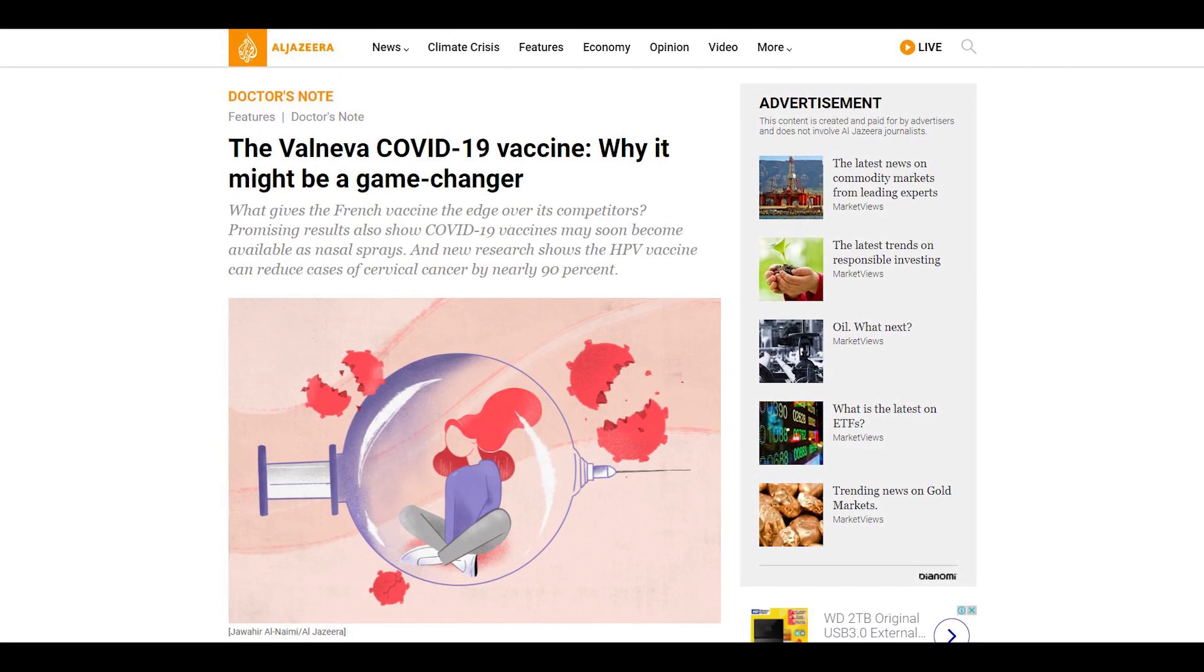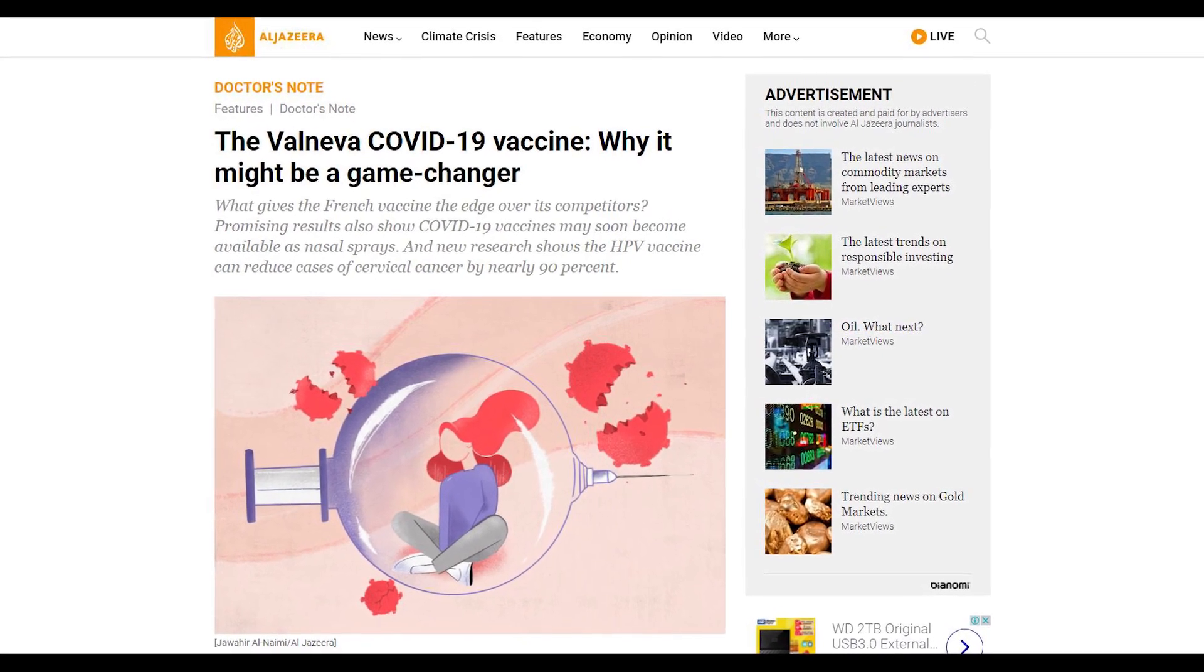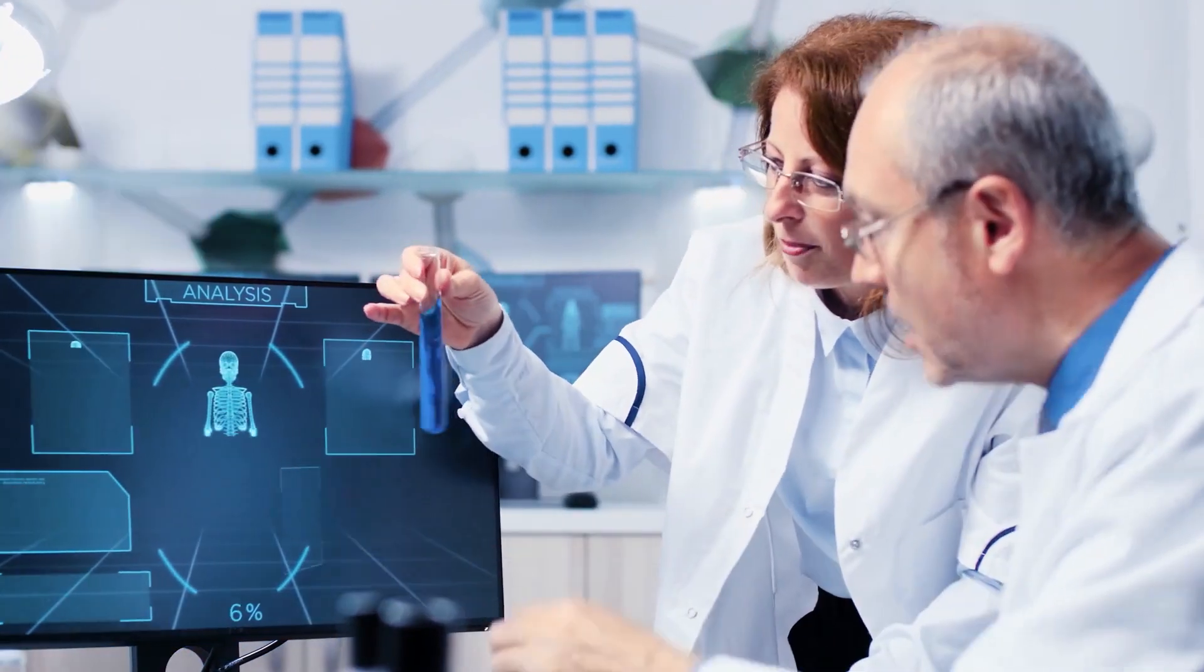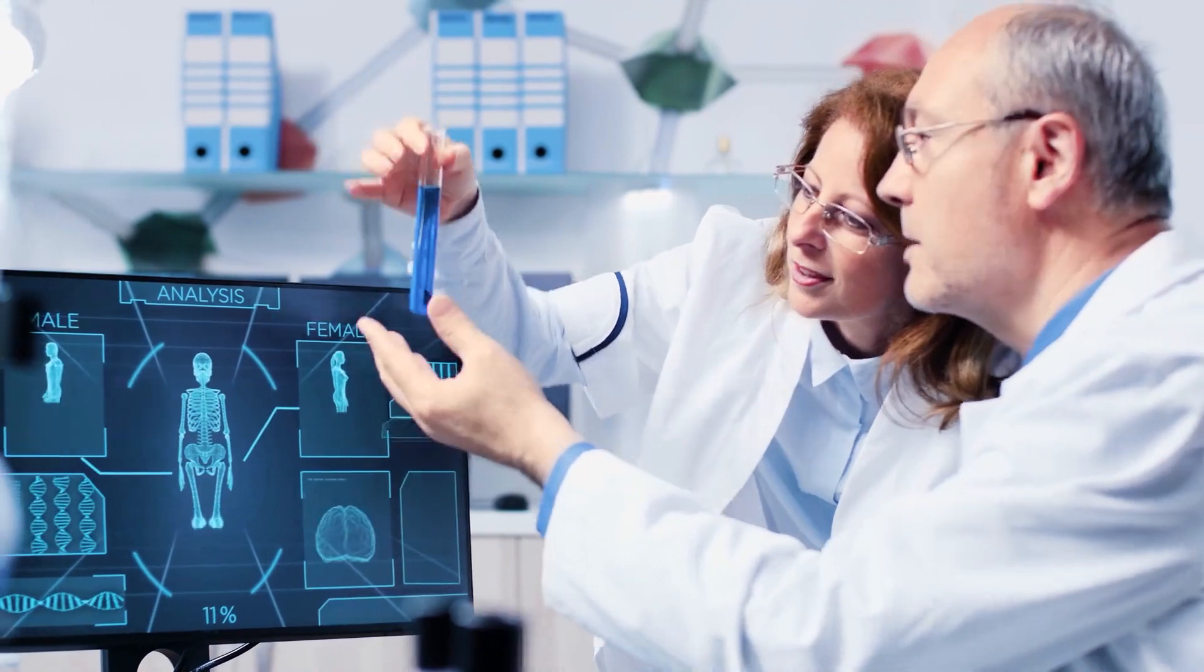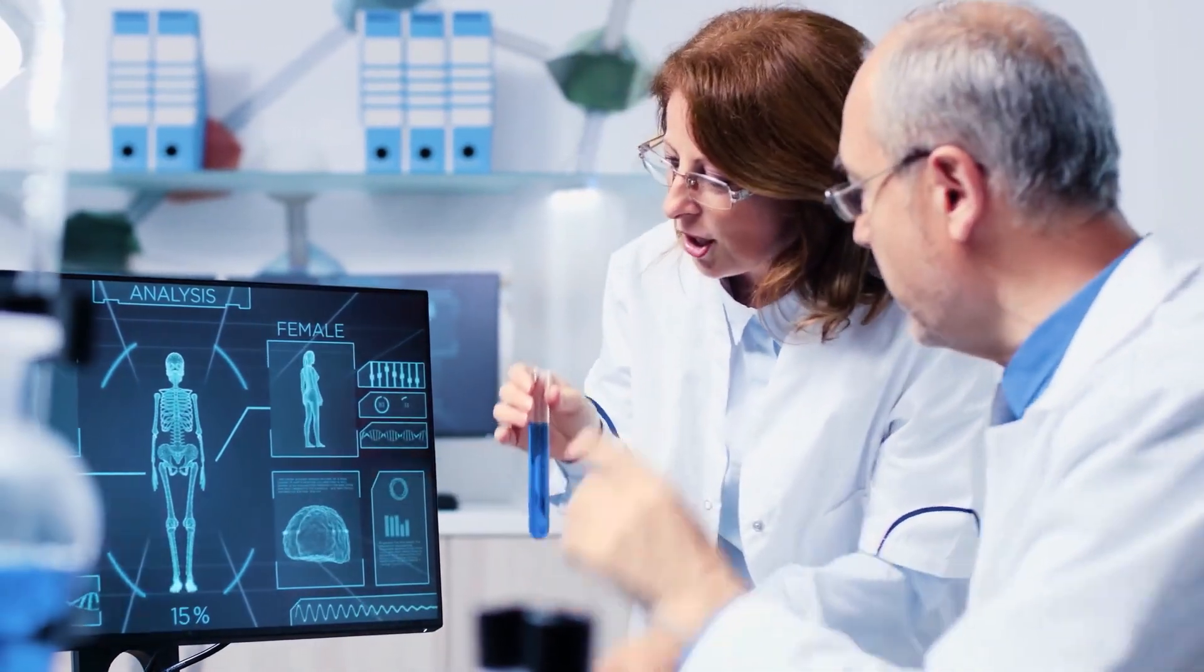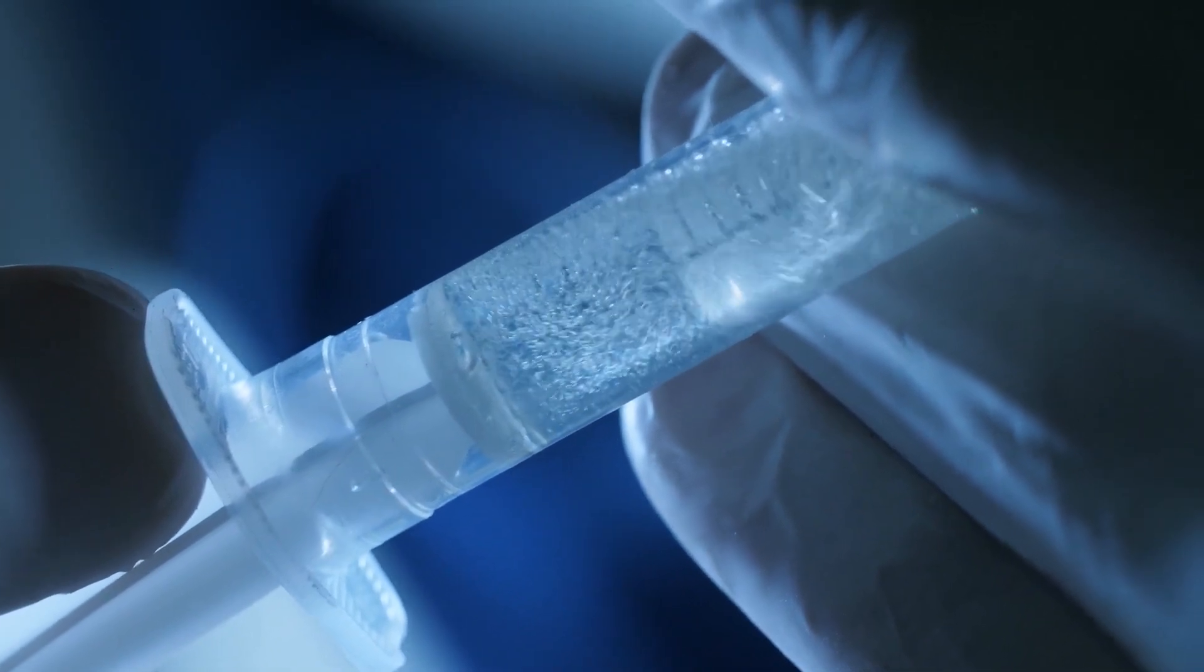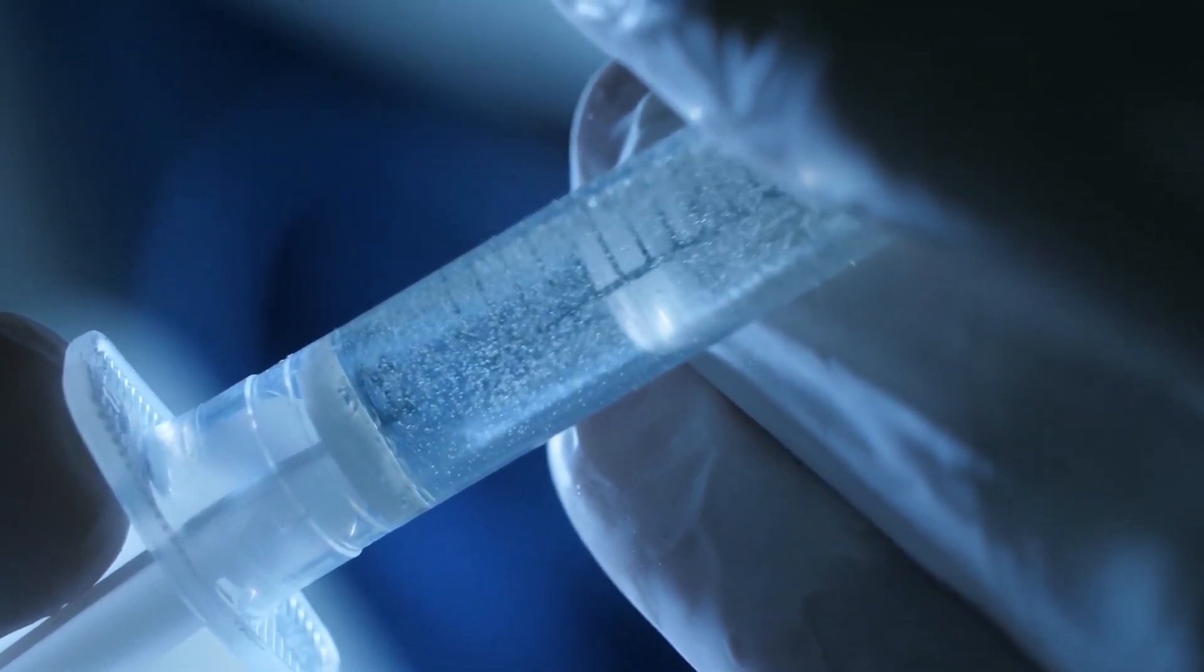According to Aljazeera, the French pharmaceutical company has a new offer. Instead of a vaccine that targets the spike protein of the coronavirus, it targets the whole virus itself. This means that Valneva's vaccine triggers the immune system to attack any part of the coronavirus, not just its spike protein.